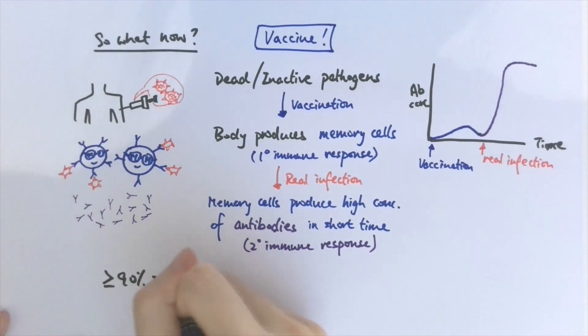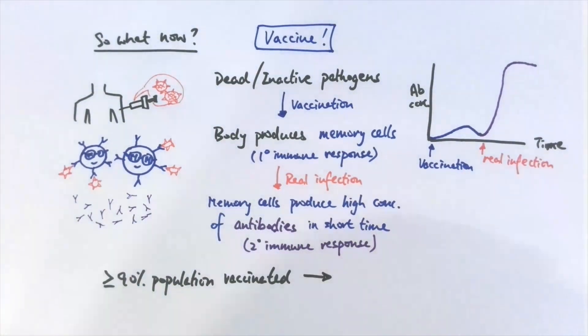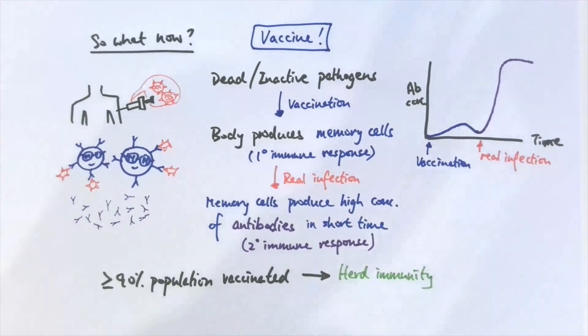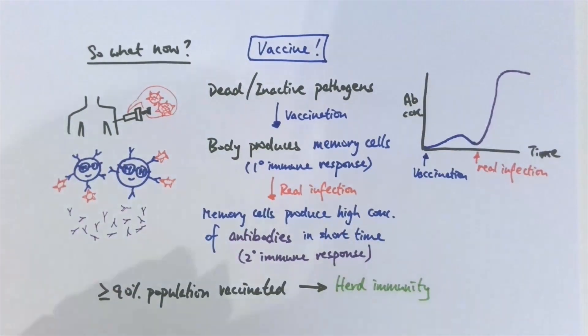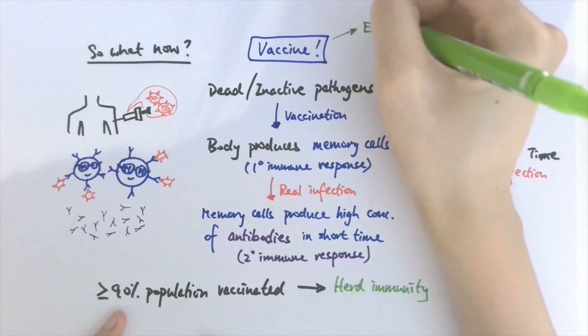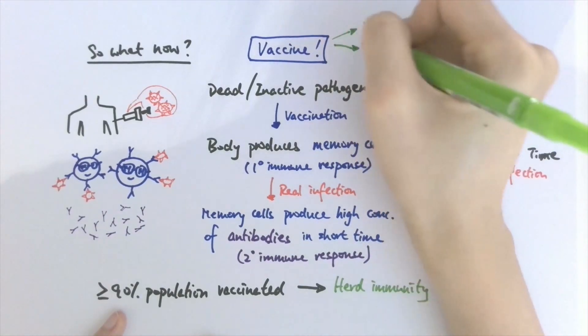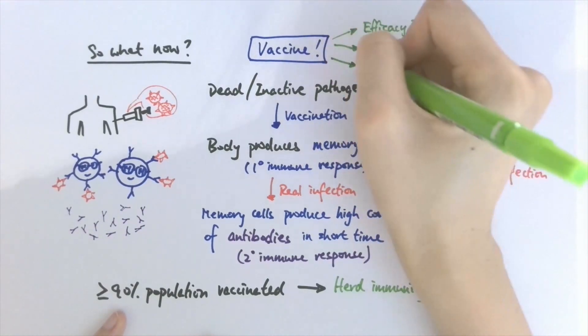If more than 90% of the population is vaccinated, we can achieve herd immunity, where the pathogen can't survive long enough in a host to reproduce and spread to other people — meaning those who cannot be vaccinated for various reasons can also be protected. In the case of COVID, there has been talk of an effective vaccine being developed, but more testing is needed to assess its efficacy, toxicity, and side effects, as with any drug trial.